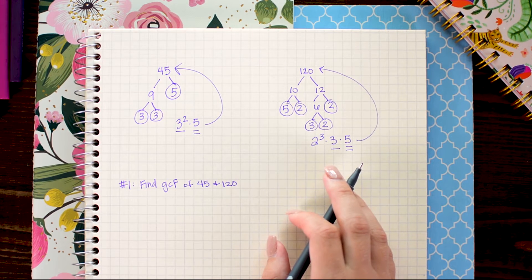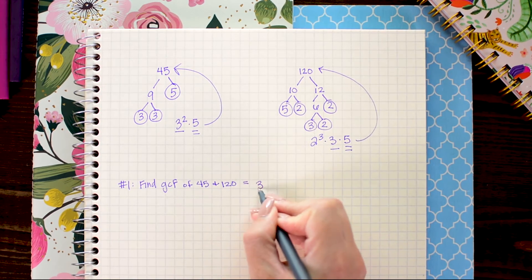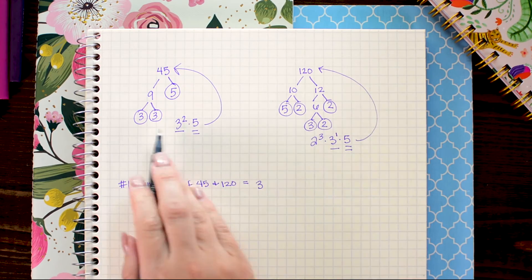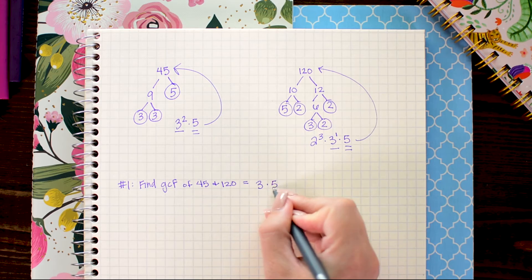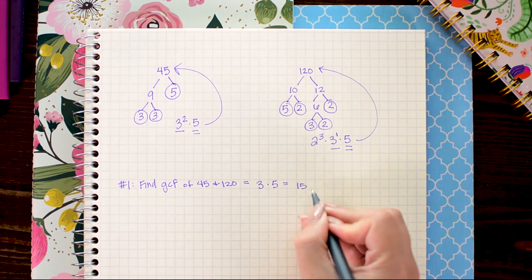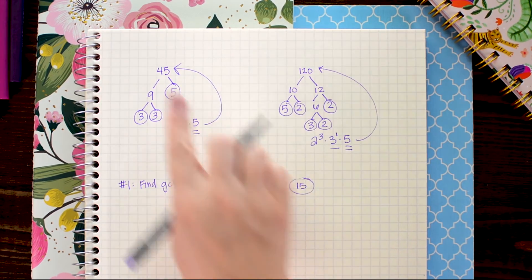So I'm going to take only what is common to both. I have a 3 looks like this is to the first power so just 3 and I have 1 five. So when I multiply these together I get 15 and 15 is the GCF of 45 and 120.